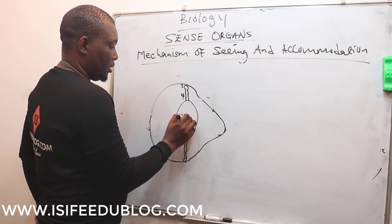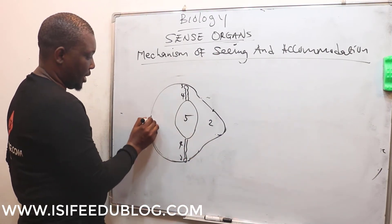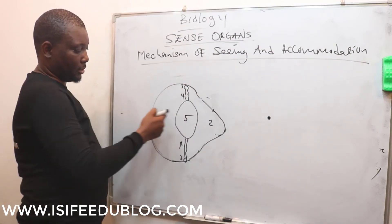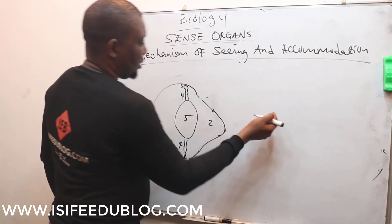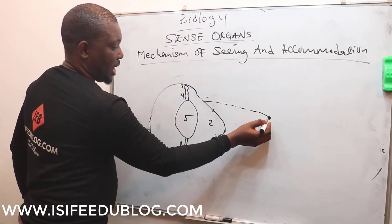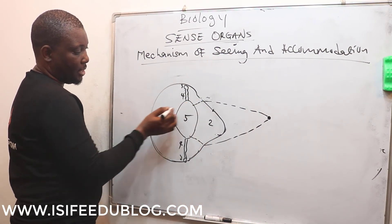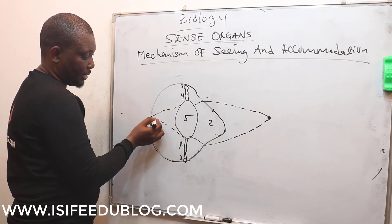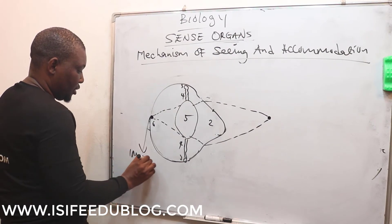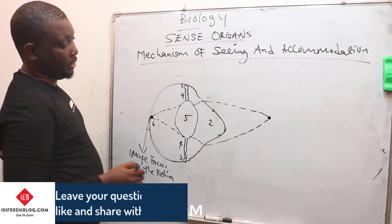On the diagram: label three is the ciliary muscle, four is the suspensory ligament, five is the lens, and two is the cornea. When the object is close to the eye, light reaching the eye is diverging. It comes in, the cornea bends it, the lens also bends it, so that the image can be focused on the retina.